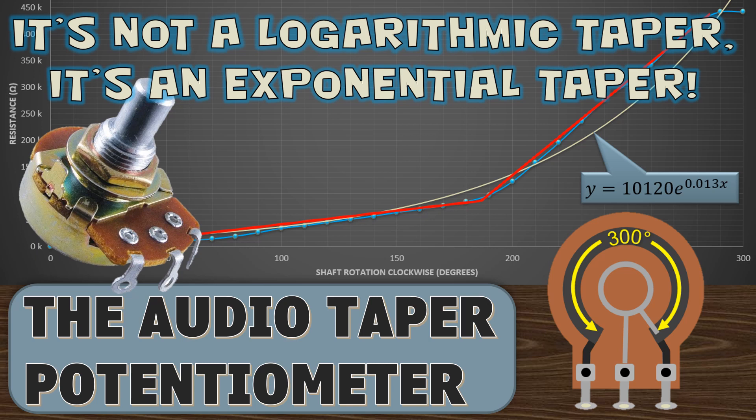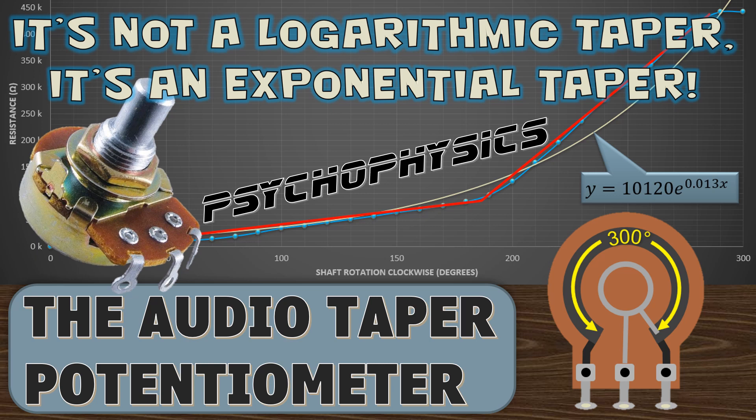Our ears interpret sound in logarithmic fashion, so the volume control must have the inverse of the logarithm, which is exponential. We will look at the laws of psychophysics to help understand how our senses work. We will also see an application where it's sometimes better to use a linear taper potentiometer for audio.